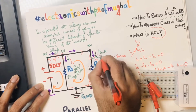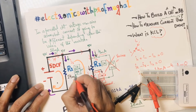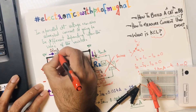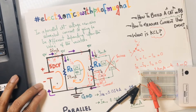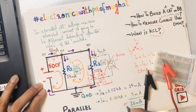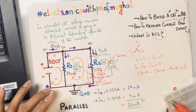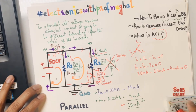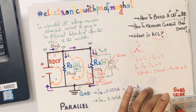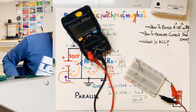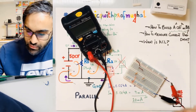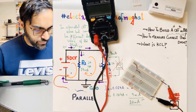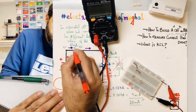Adding the two currents: 14 milliamps through R1 plus 4 milliamps through R2 gives a total of 18 milliamps. Most current flows through the branch with less resistance, which tells us that R1 is significantly smaller in resistance than R2. The total current entering the node splits: 14 mA goes one way, 4 mA the other.